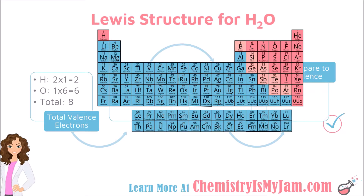Here is our first example where we will be drawing the Lewis structure for water, which has 2 hydrogens and 1 oxygen. The first thing we are going to do is total the valence electrons. There are 2 hydrogens in the molecule. Hydrogen is in group 1 and has 1 valence electron. 2 times 1 gives 2 valence electrons due to the hydrogens in water.